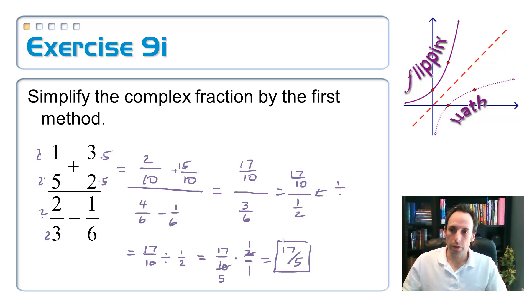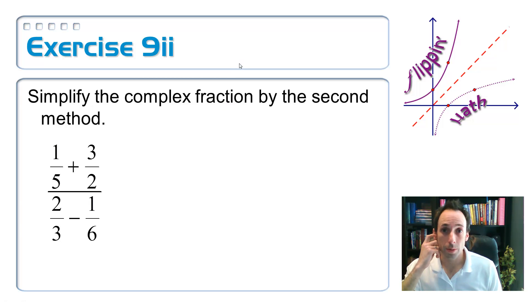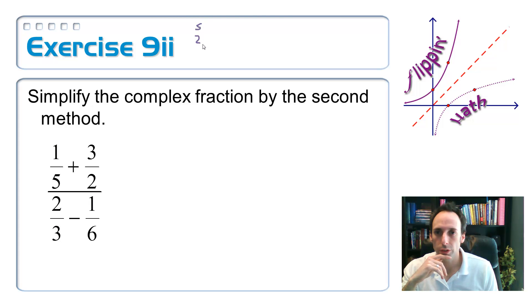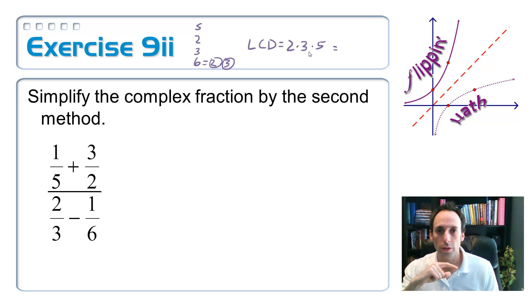Let's try the second method — multiply the top and the bottom by the least common denominator of all of the denominators. I have a 5, a 2, a 3, and a 6. The least common multiple: I need a factor of 2, a factor of 3, and a factor of 5. Altogether that is 30.